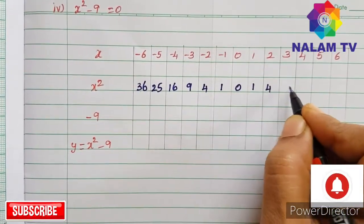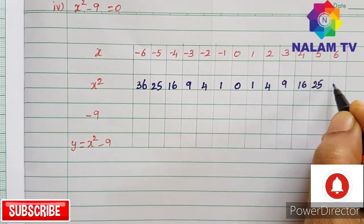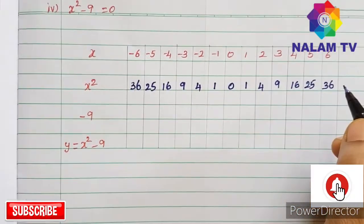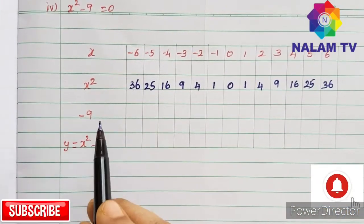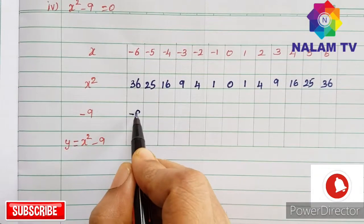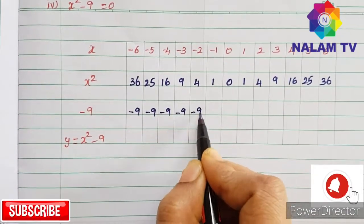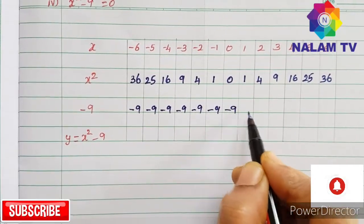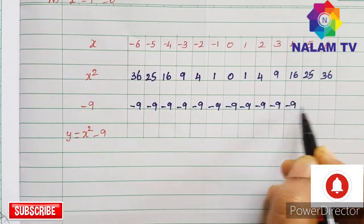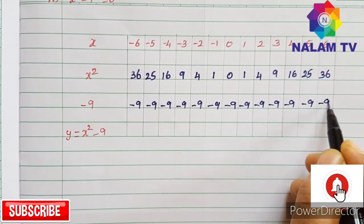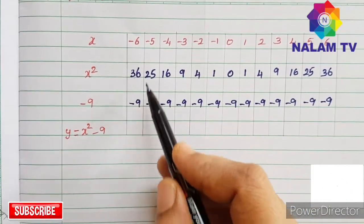The next step is minus 9 — the constant. We will take x squared minus 9, then we will simplify the two numbers.